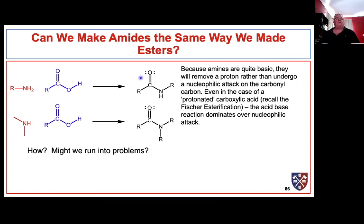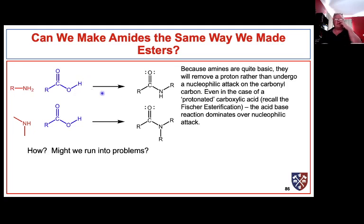As discussed in the last video, we're going to discuss the synthesis of the carboxylic acid derivative of an amide. An amide can be thought of as an amino group replacing a hydroxyl group of a carboxylic acid to form the amide.